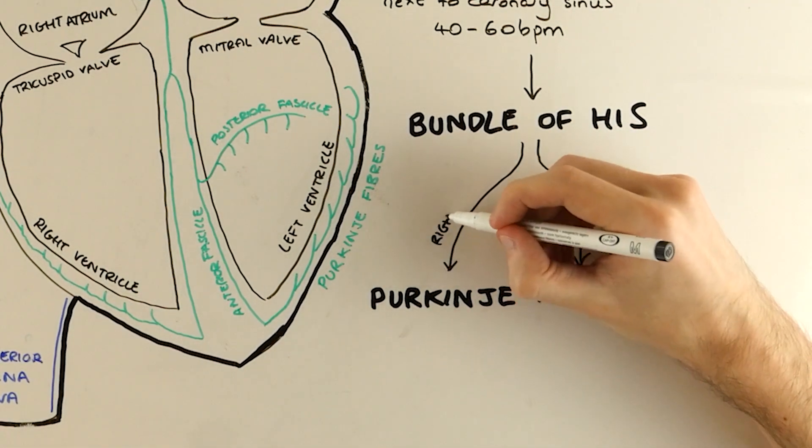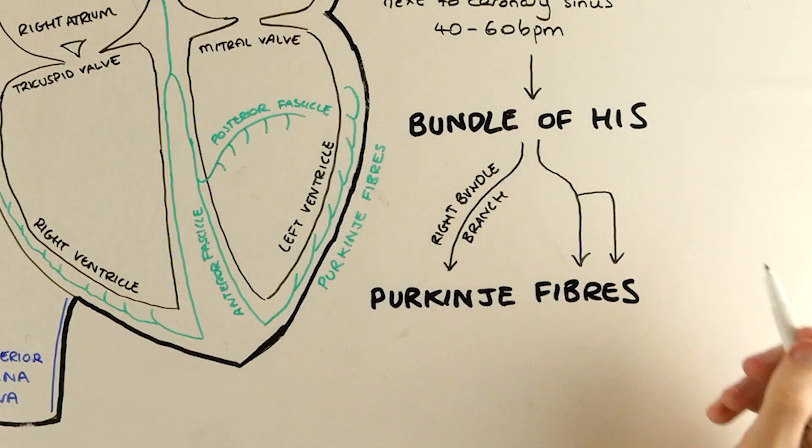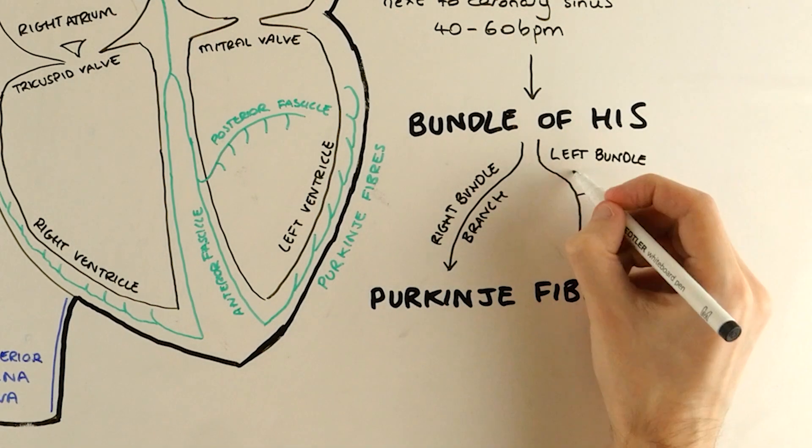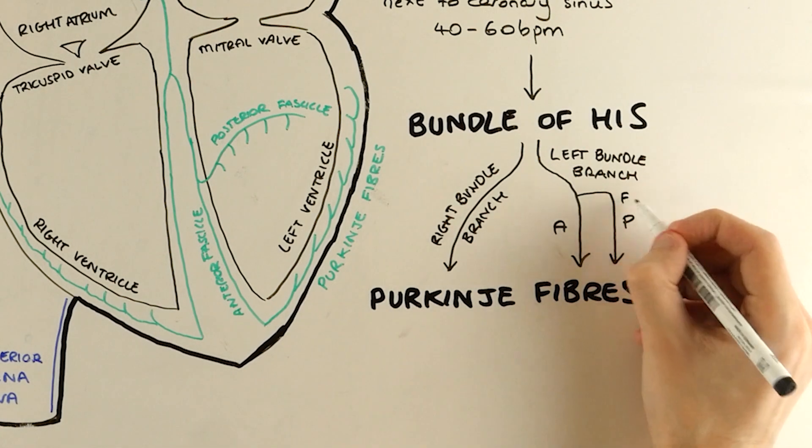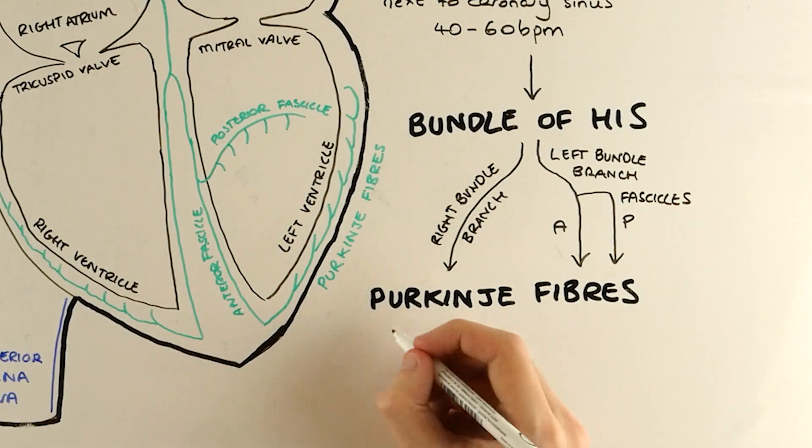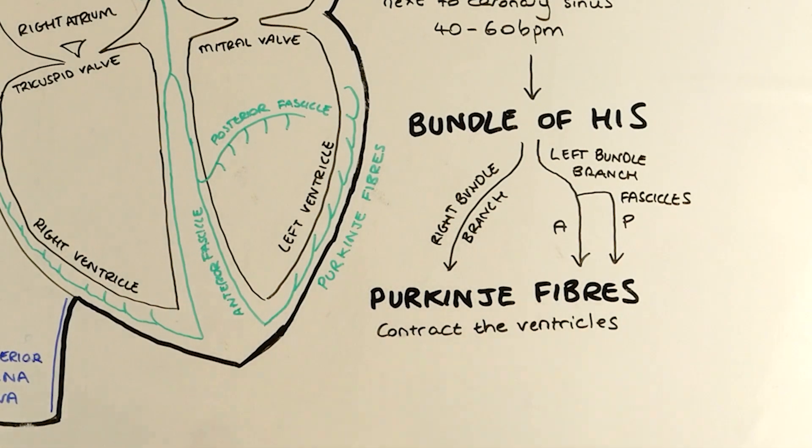As before, these fibres can actually depolarise by themselves if the earlier conduction system is compromised, and they'll do this at 15 to 40 beats per minute. But this is very much the last resort of a significantly struggling and damaged heart.